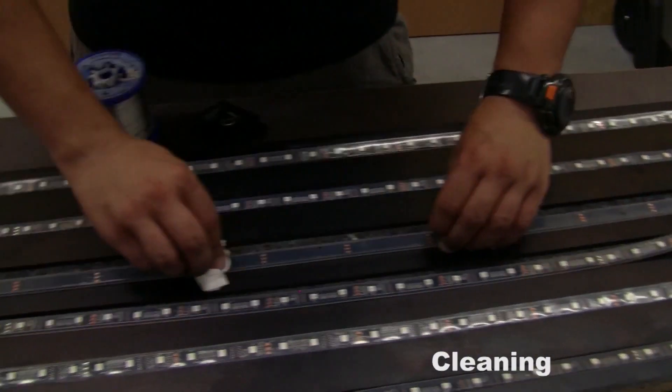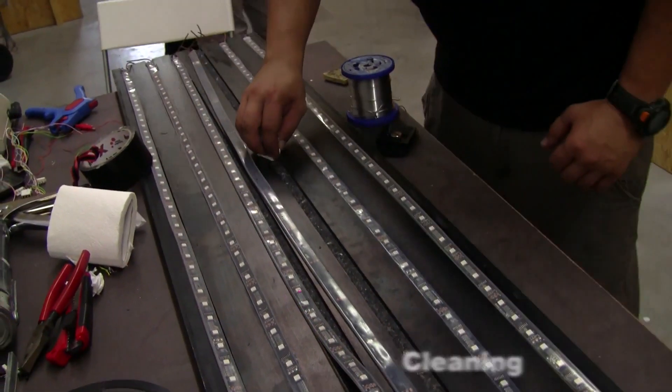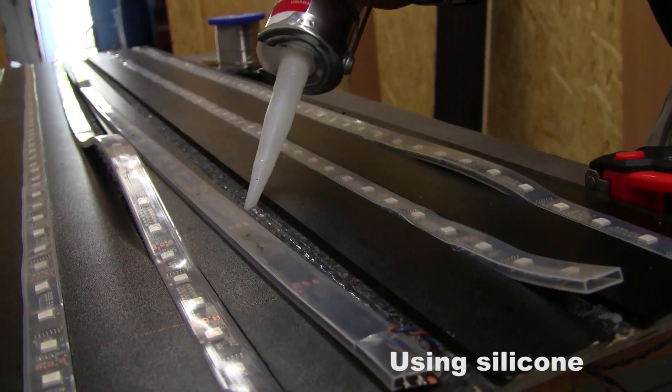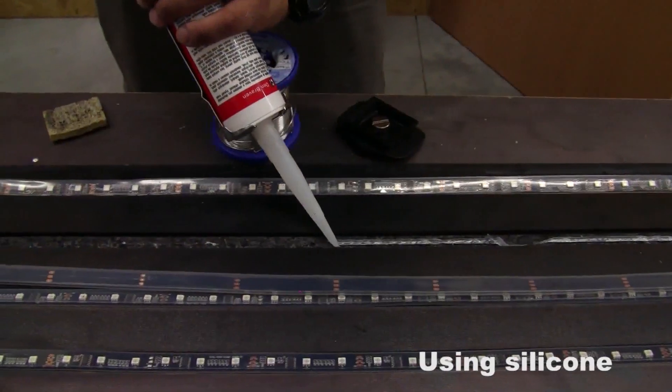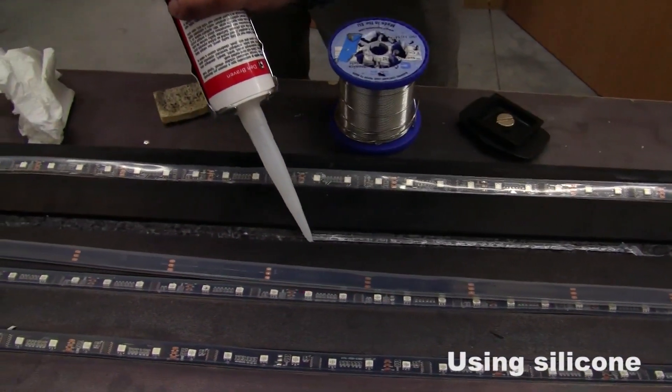In case we do, we need to thoroughly clean the surface of the strip as well as the surface where we want to place the strip. Afterwards, we spread the silicone onto the LED strip and push it onto the surface where we can let it dry.